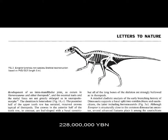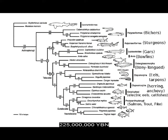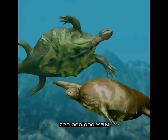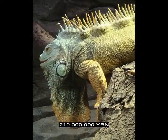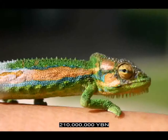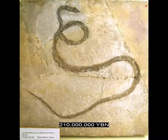Reptiles — dinosaurs evolve. Mammals evolve. First nipple, mammary gland, and breast. Teleost fishes evolve. Reptiles, turtles. The first flying vertebrate — pterosaur. Reptiles: iguanas, chameleons, and spiny lizards. Reptiles: snakes, skinks, and geckos.